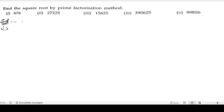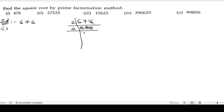In the first bit we are having 676. Now let us take out its factors. Since the last digit is 6, it comes in the 2 table: 2 into 338. Continuing: 169 is the number which we get by multiplying 13 and 13.